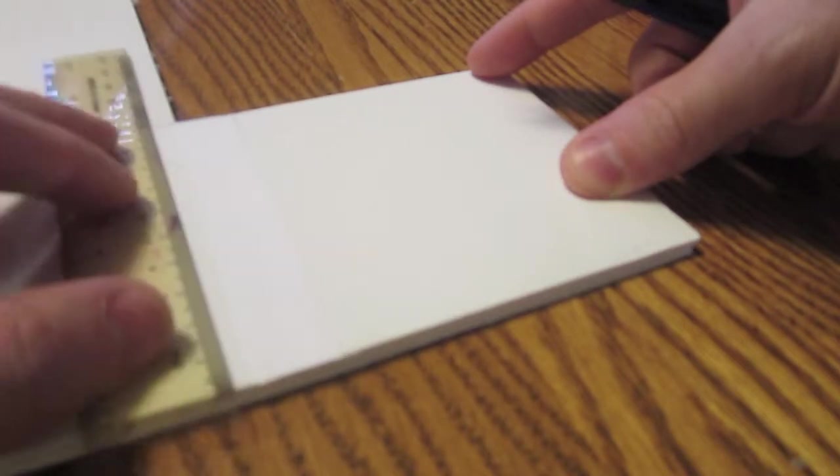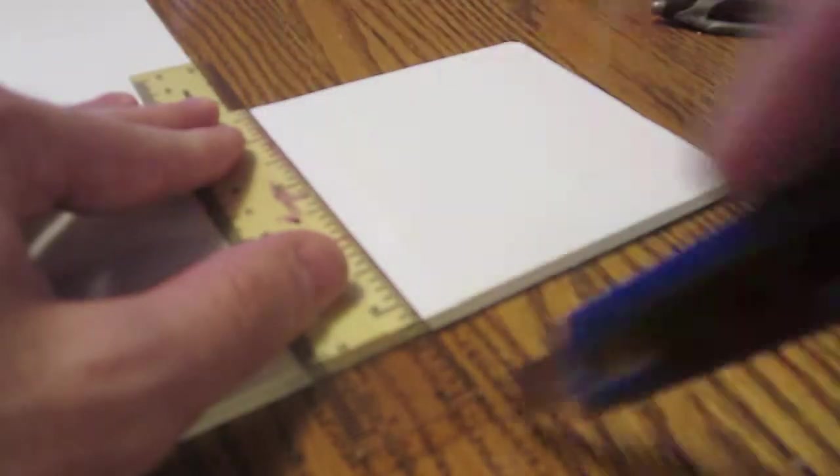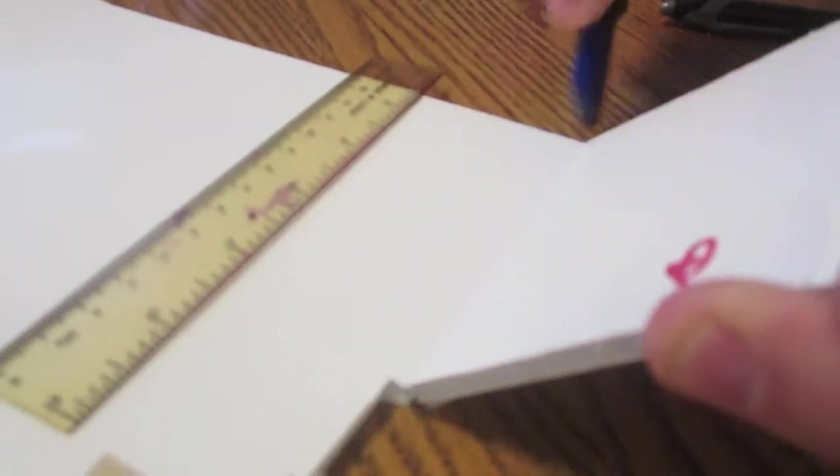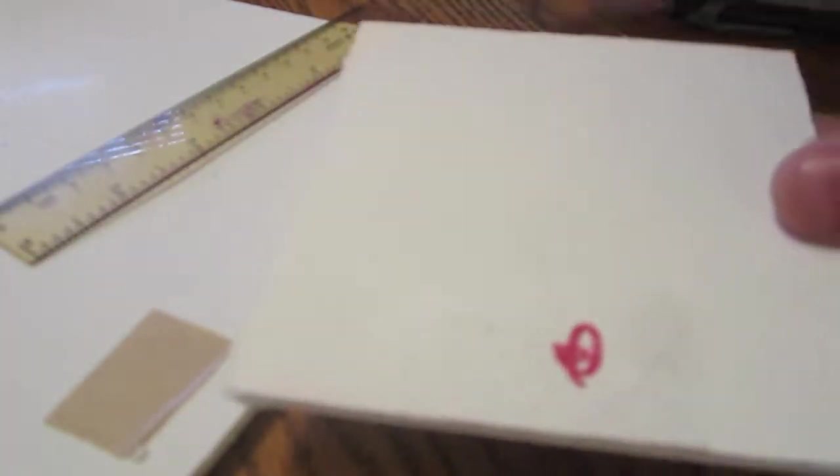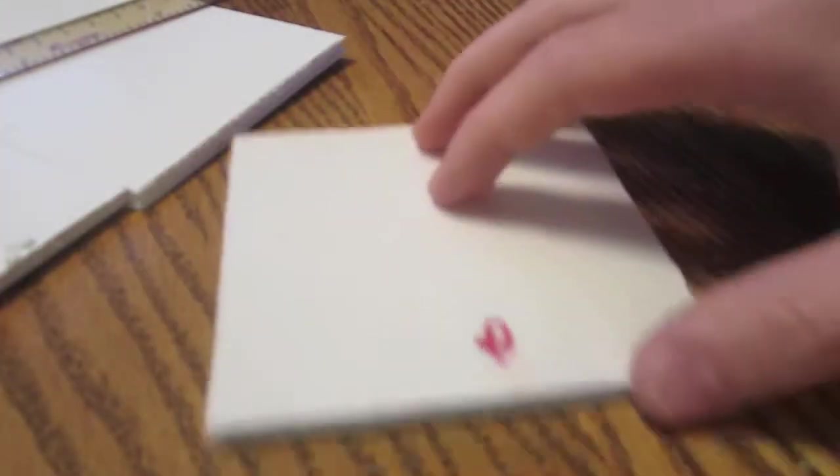Alright, got a bunch of scrap pieces left over. We're gonna cut out a four inch by four inch piece. Thankfully this piece is already four inches long, just need to cut it off four inches wide. Four inches right about there, four inches right about there. Go ahead and put this in those two lines. Go ahead and flip it over. Just gonna go ahead and cut that once or twice, just pop out.